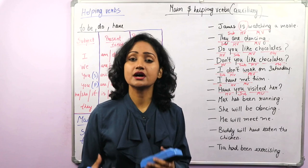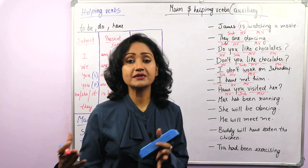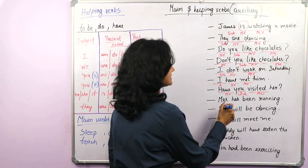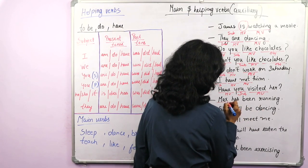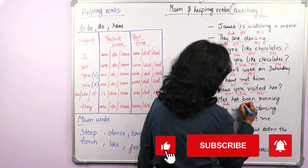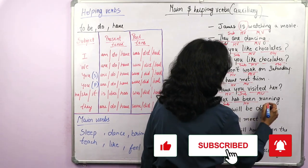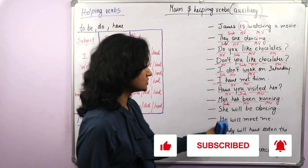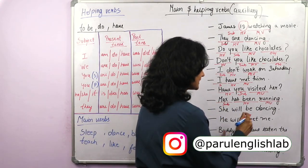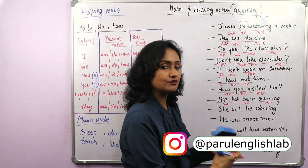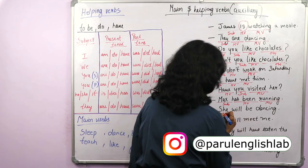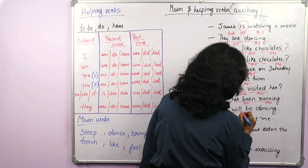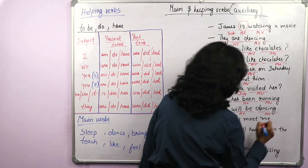'Max has been running.' This is the subject; has been is the helping verb, and running is the main verb. 'She will be dancing' — will be is again a helping verb. She is the subject, will be is the helping verb, and dancing is the main verb.